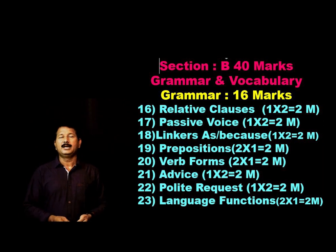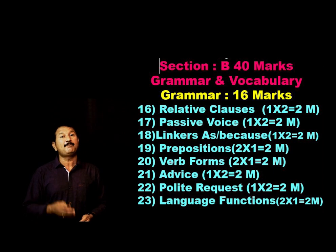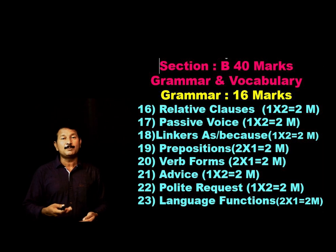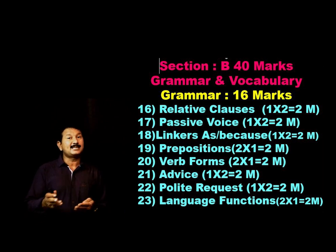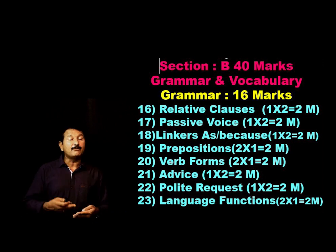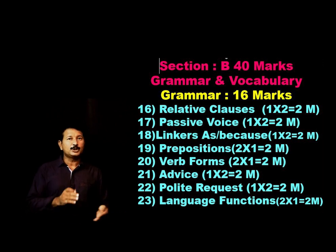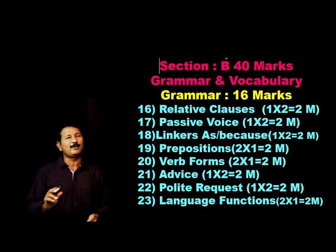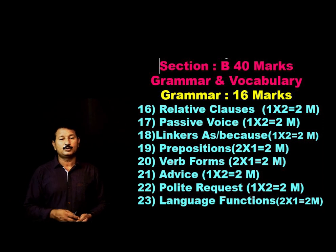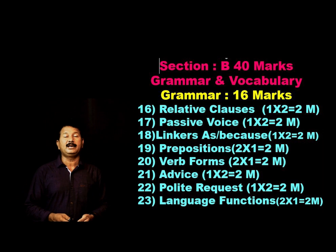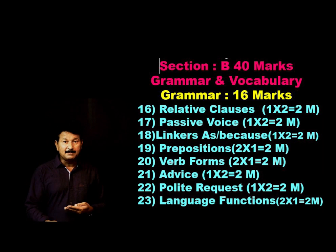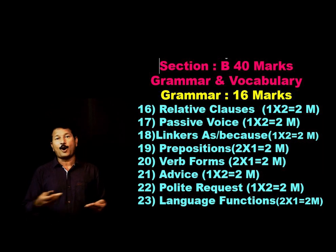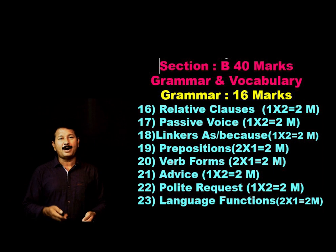Question number 22 is polite request — one question and two marks. For example: instead of saying 'Where is the ATM?' you can say 'Could you tell me where the ATM is?' or 'Please tell me where the ATM is.' Question number 23 is identifying the correct expression — like 'Can I carry the bag for you?' identifying whether it is asking permission or offering help. This is all about the grammar part.